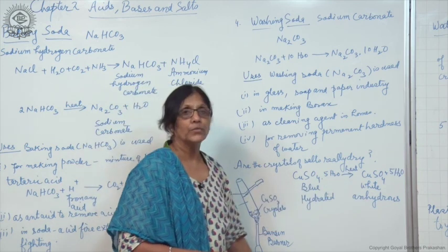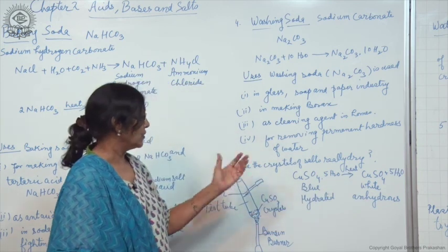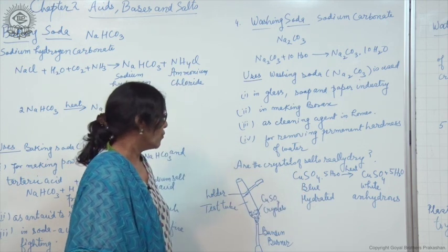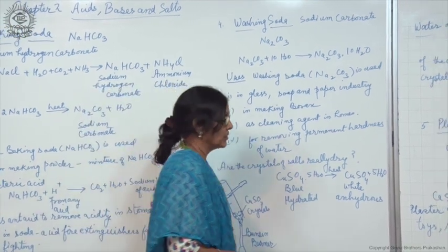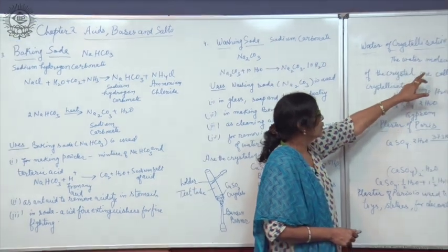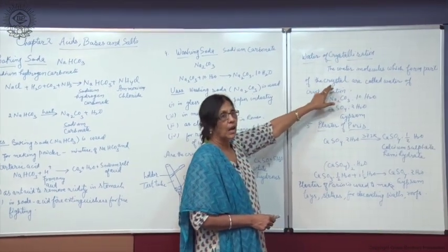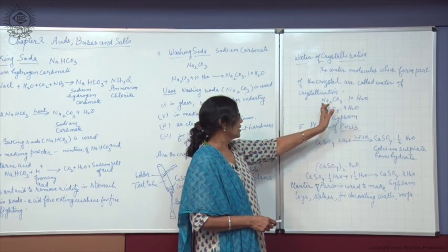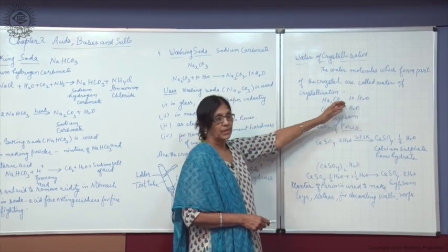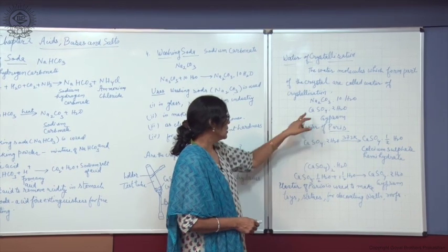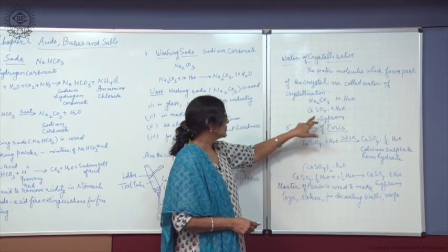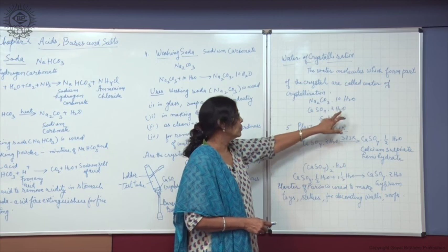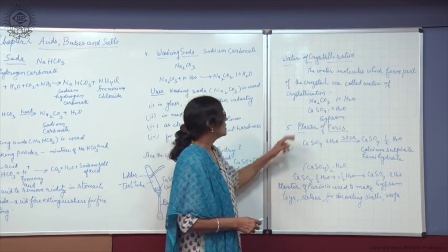On this white salt, if water drops are sprinkled, it again changes back to blue. What actually is water of crystallization? The water molecules which form a part of the crystal are called water of crystallization. This example we have already studied: Na2CO3.10H2O. One example we have taken in the activity. There is another example: gypsum, CaSO4.2H2O. It has two molecules of water in the crystal.